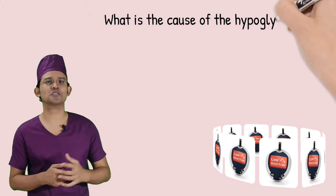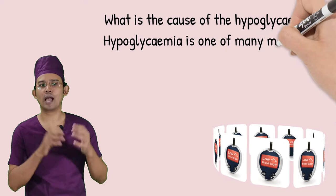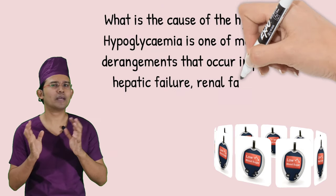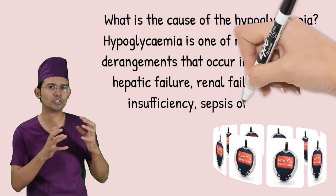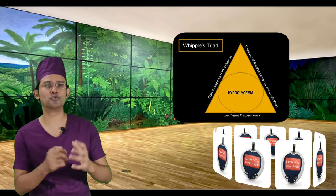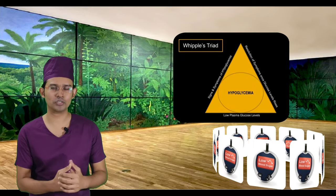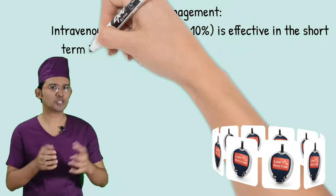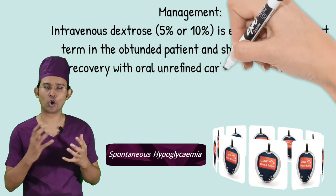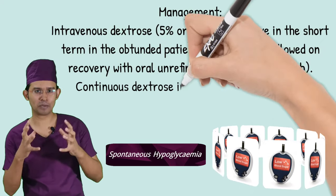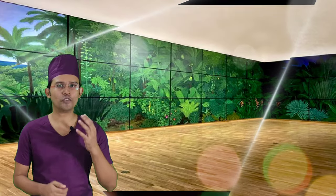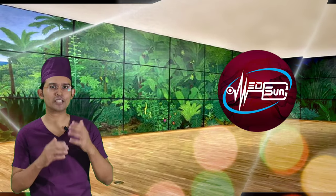Hypoglycemia can also occur in patients with hepatic failure, renal failure, adrenal insufficiency, and sepsis. To summarize, remember Whipple's Triad for diagnosis and the insulin and C-peptide measurement approach for differential diagnosis of spontaneous hypoglycemia. That's all for today — I hope you enjoyed it and have a great day.